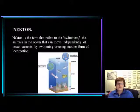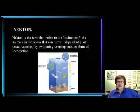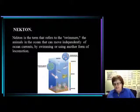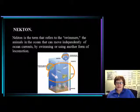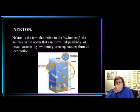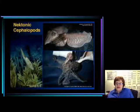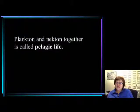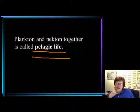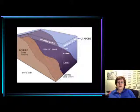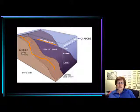The nekton is the part of the ocean community where all the swimmers are — animals that can move independently and are not simply drifting like plankton. The plankton and the nekton together are called pelagic life. Make sure you remember this because it may appear on a quiz. This diagram shows the different parts — the slope, the rise, and the abyssal plain — and the photic zone is the pelagic zone.